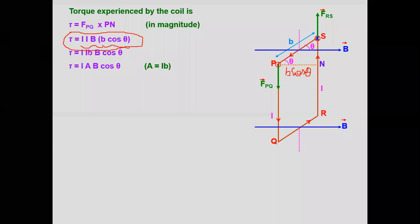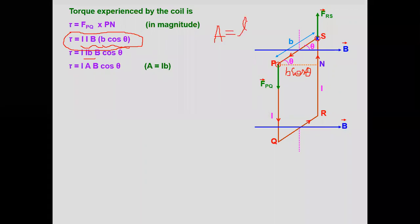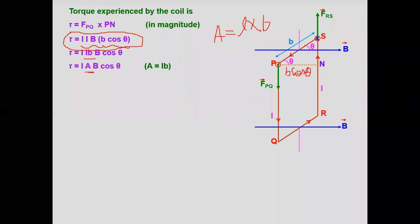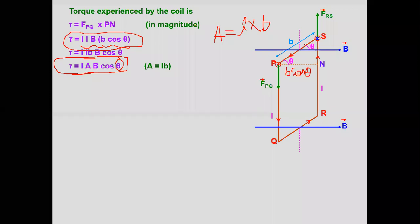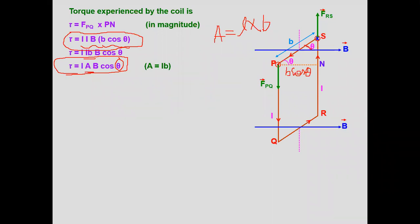So the torque value is τ = IAB cos θ. Always remember: the θ here is the angle between the plane of the coil and the magnetic field. θ is measured from the plane of the coil to the magnetic field.